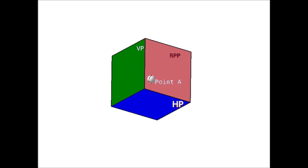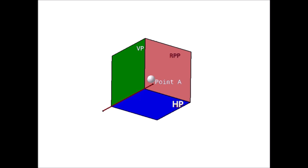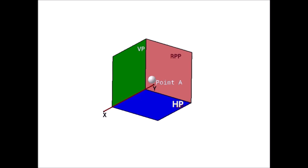There are three reference planes: namely the horizontal plane, vertical plane, and right profile plane. It is assumed that all these reference planes are transparent. As explained in the previous video, the XY line is the line of intersection of horizontal plane HP and vertical plane VP, so it is the line which separates the horizontal plane and vertical plane.